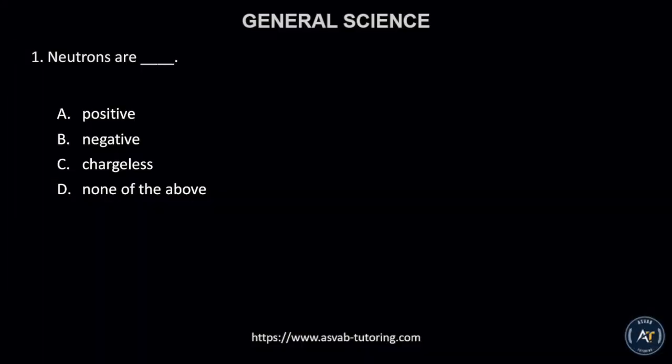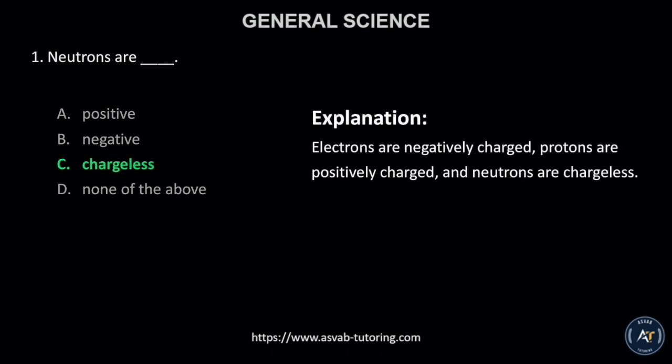Number 1. Neutrons are? A. Positive, B. Negative, C. Chargeless, or D. None of the above. The correct answer is letter C, Chargeless. This is because electrons are negatively charged, protons are positively charged, and neutrons are chargeless.